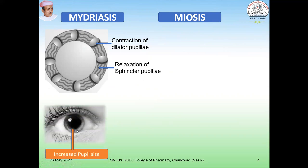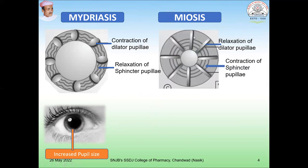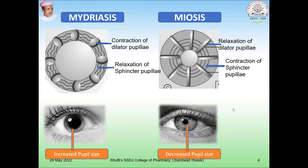If you see the actual picture, you can observe the dark black color pupil whose size is increased. Opposite to this is miosis, where there is a relaxation of the dilator pupillae and constriction of the sphincter pupillae, resulting in constriction of the pupil size. Looking at both figures, you can immediately understand: dilation of the pupil is mydriasis, and constriction of the pupil is miosis.